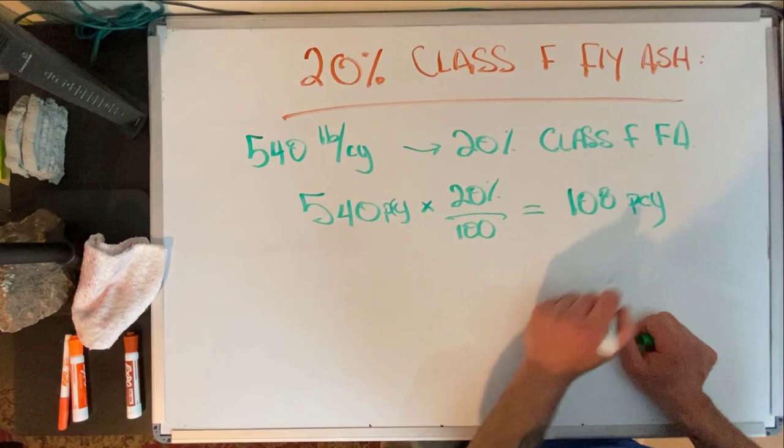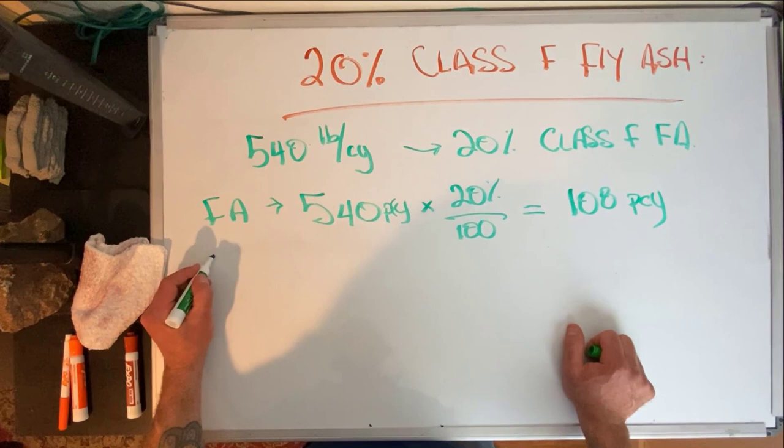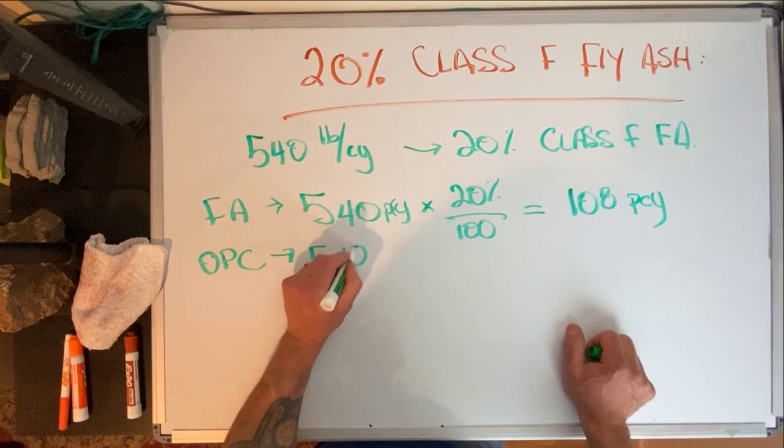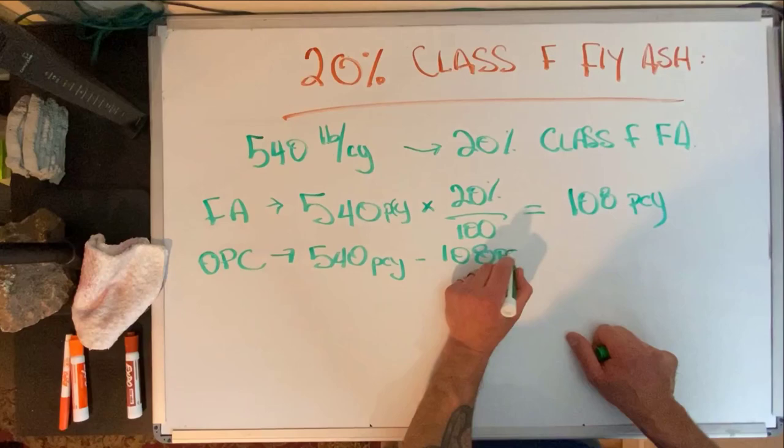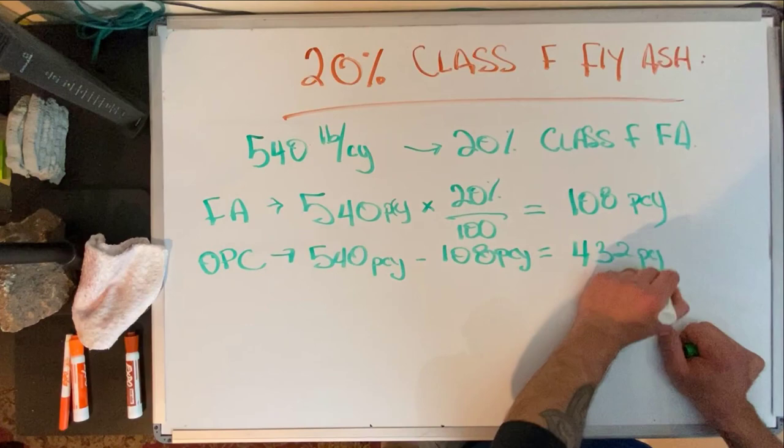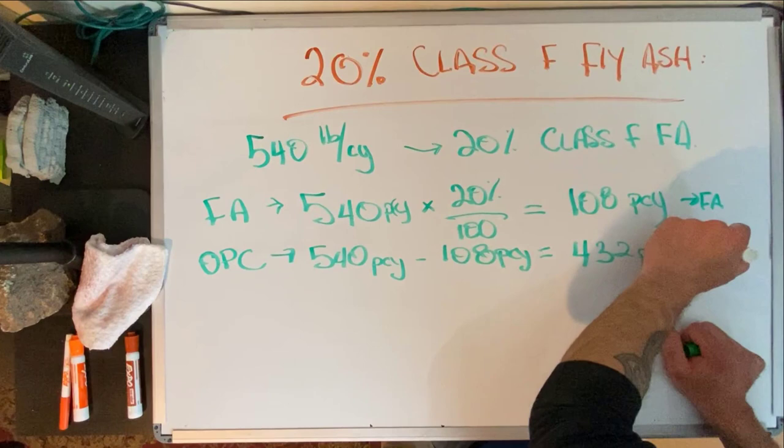for our fly ash. So that means our straight or Portland cement is going to be 540 pounds per cubic yard minus 108 pounds per cubic yard, which equals 432 pounds per cubic yard. So there's our fly ash and